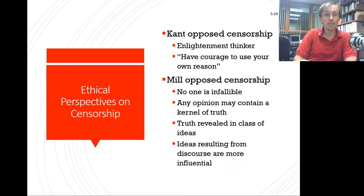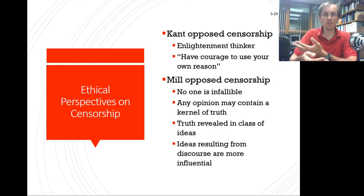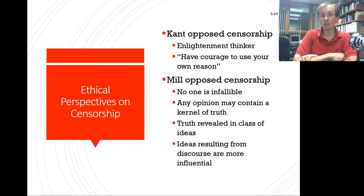There are various ethical perspectives on censorship. Kant opposed censorship — the Enlightenment was a reaction to institutional control by the aristocracy and the church. Kant believed people should be able to exercise their own reason, and that restrictions preventing them from doing so were a backward step. Mill also opposed censorship, arguing that no one is infallible and any opinion may contain a kernel of truth.